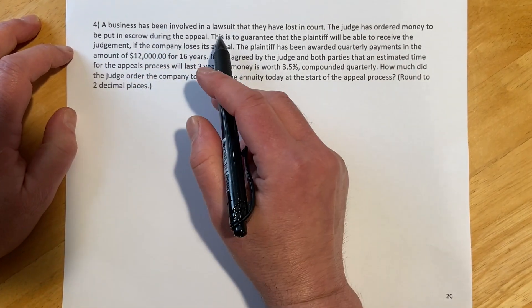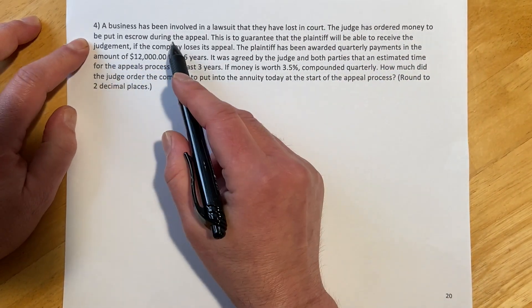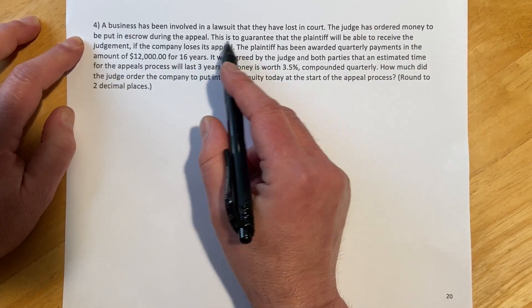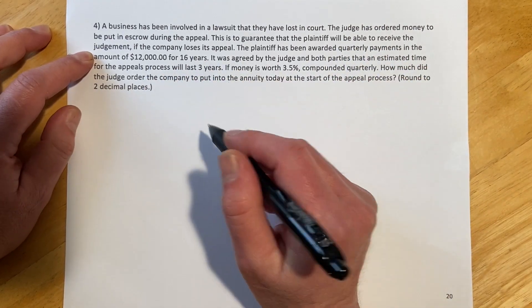Okay, so this goes: a business has been involved in a lawsuit that they've lost in court. The judge has ordered the money to be put in escrow during the appeal. This is to guarantee that the plaintiff will be able to receive the judgment if the company loses the appeal.